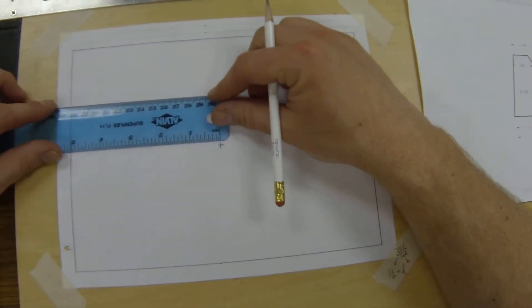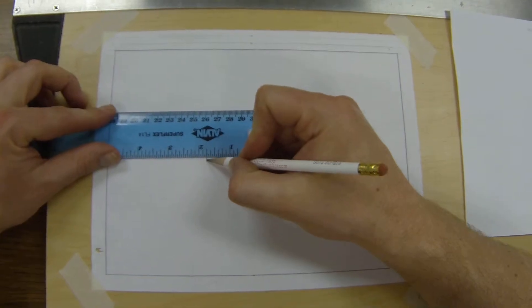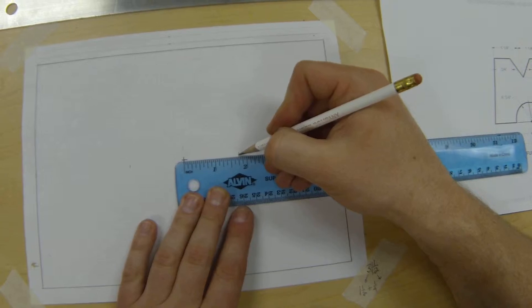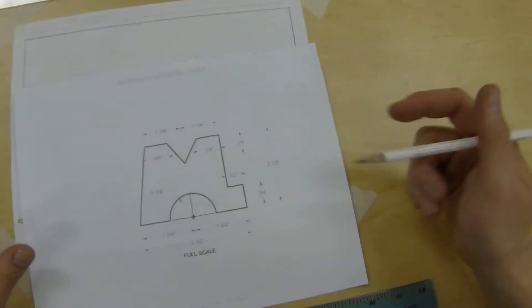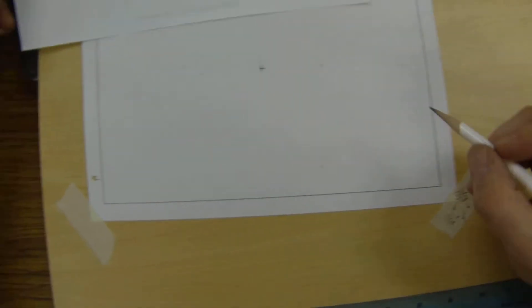I'm going to take that measurement, which is 1 and 3/4 inches, and I'm going to measure to the left. I'm going to turn this over and measure to the right.